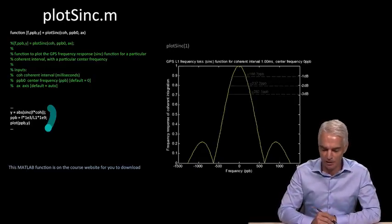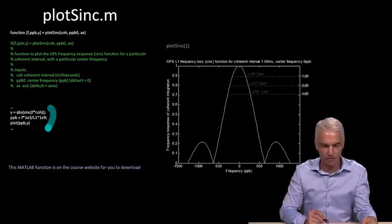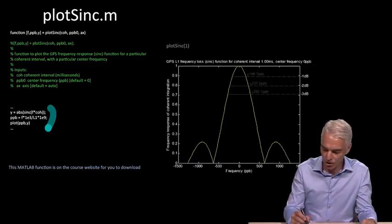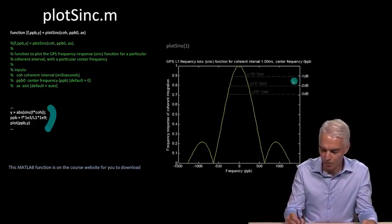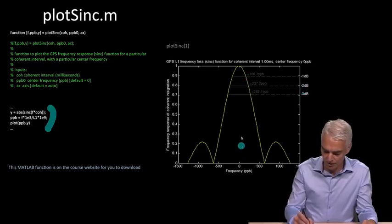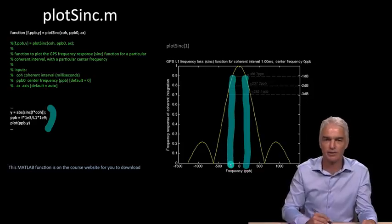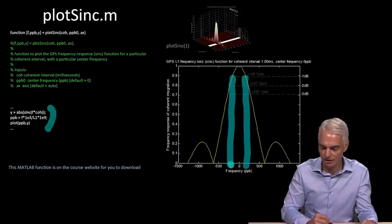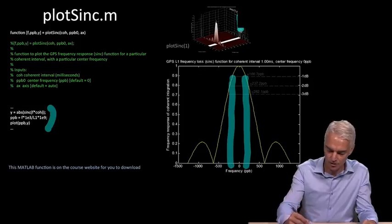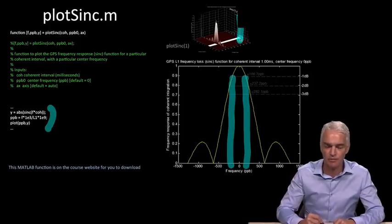If we run that in MATLAB, PlotSinc of 1 millisecond, then it'll plot that and then show for you where the 1 dB point is, the 2 dB point, and so on. You can see the 1 dB points about plus or minus 250 Hz, just like we worked out. That corresponds to what we just worked out on the previous slide.